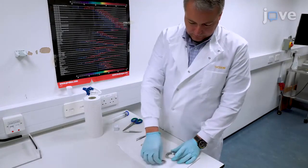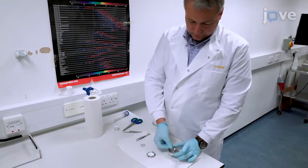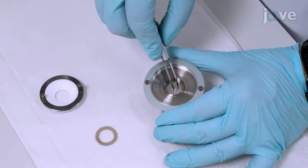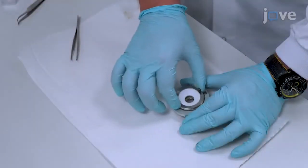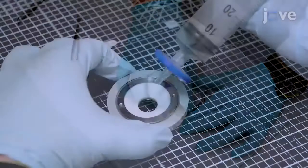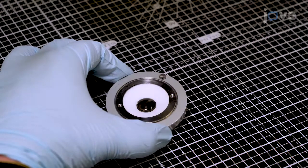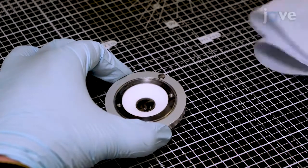To immobilize the islets for imaging, assemble an imaging chamber for an inverted microscope and place a glass coverslip inside the chamber. Make sure that the glass chamber interface is watertight and confirm that the coverslip is within the reach of the microscope objective.